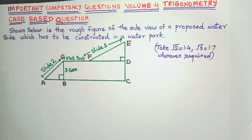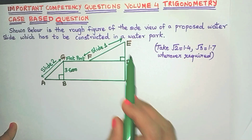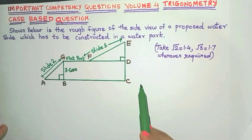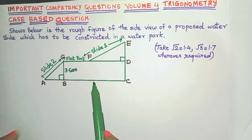Hello everyone. Today let's learn how to solve some important competency questions of trigonometry from volume 4. This topic is a request from one of our EnjoyMath viewers. Here is the case-based question — this is the rough figure of the side view of a proposed water slide which has to be constructed in a water park.